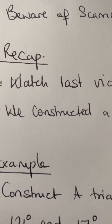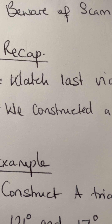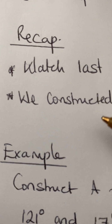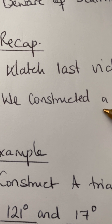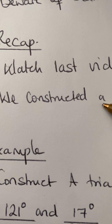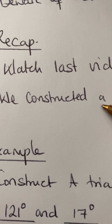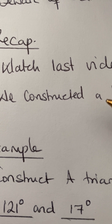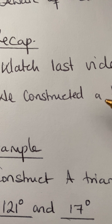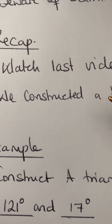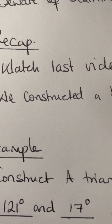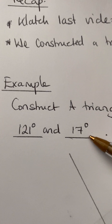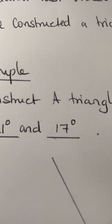Now for a recap — you can watch the last video for the full recap. What we did was constructing triangles, and last lesson we looked at assuming you've been given two angles and one side. How do you do that? I'm going to quickly go through an example of that.